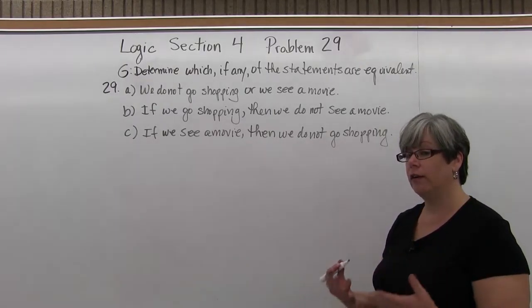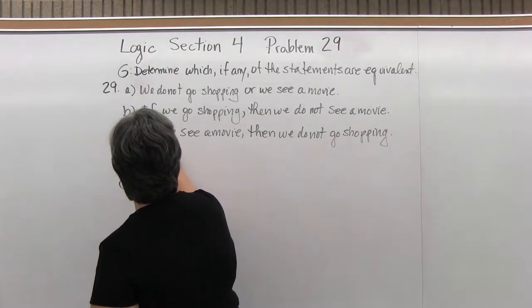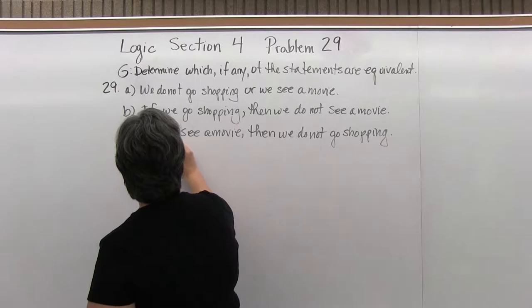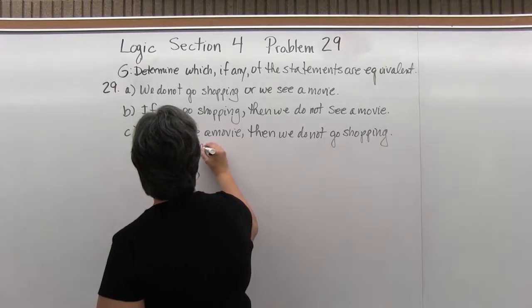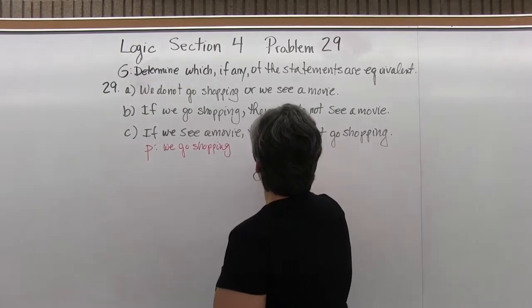Let's start by translating them into their logical values. P will be we go shopping, and Q will be we see a movie.